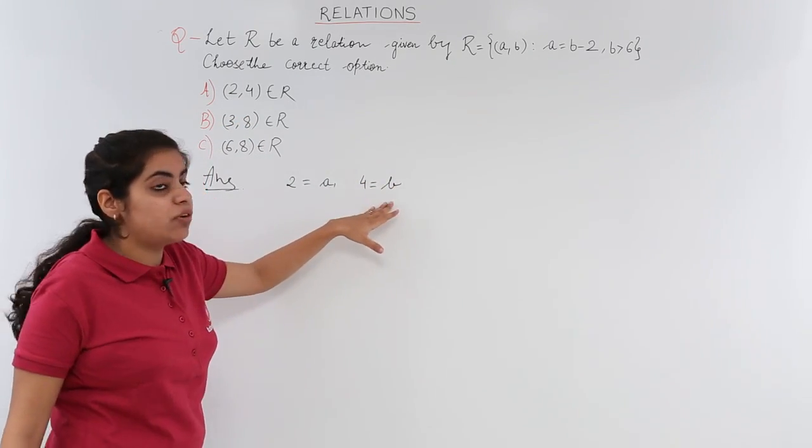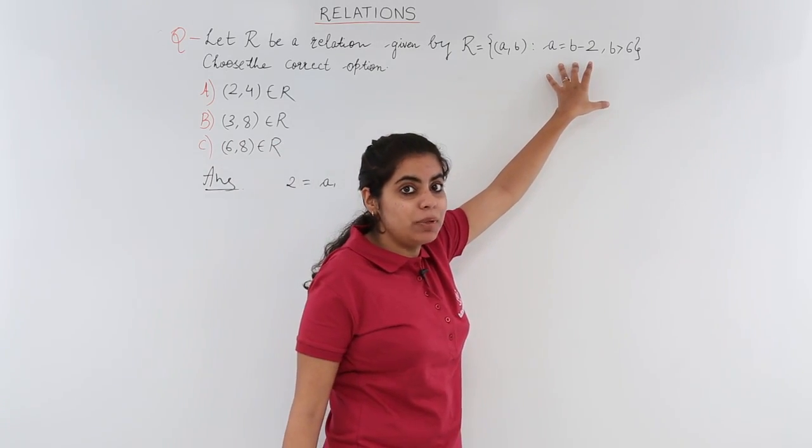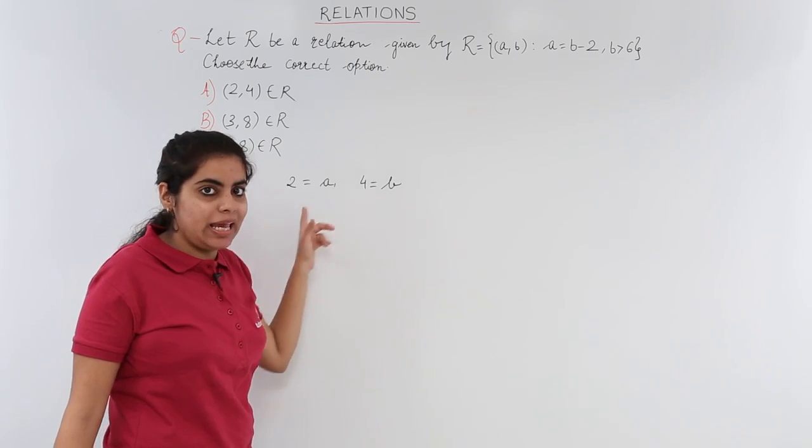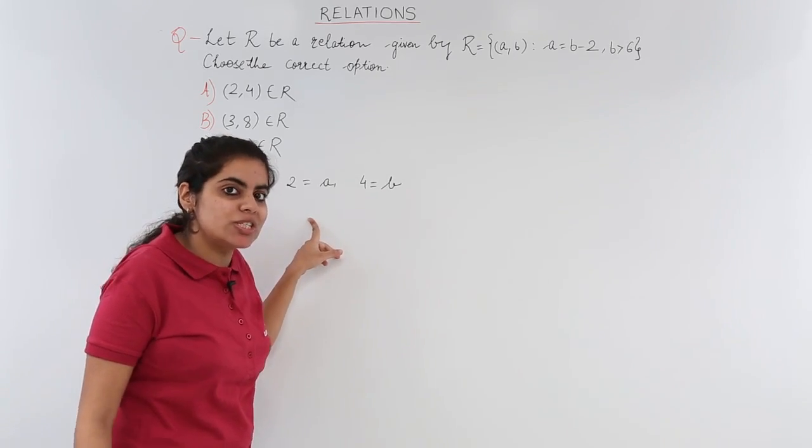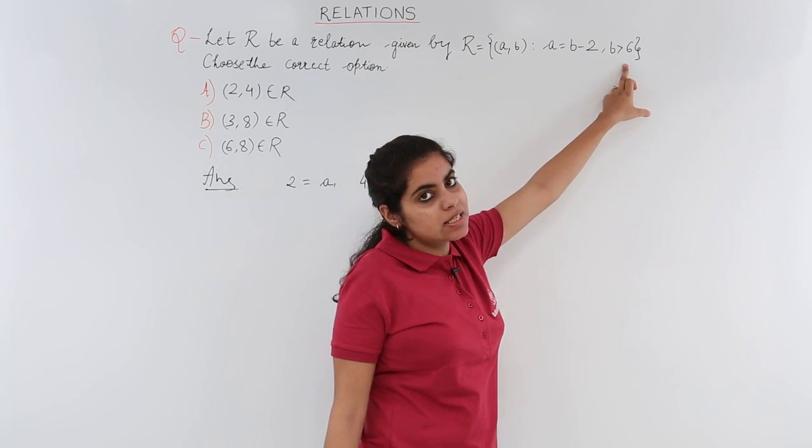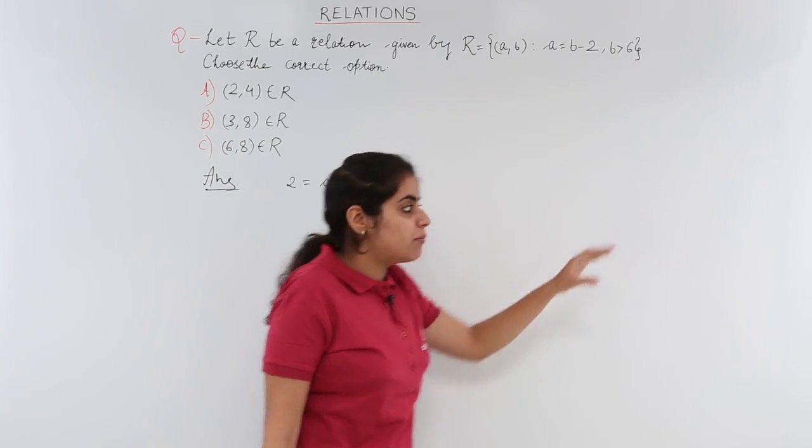It is following the relation that a is equal to b minus 2 because 4 minus 2 will give me 2, which is a.